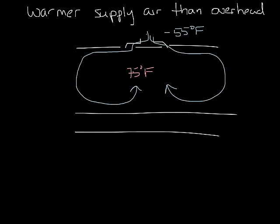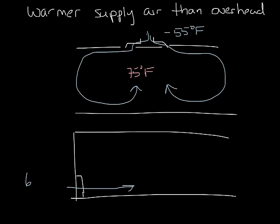In underfloor systems and displacement ventilation systems, the supply air goes right into the occupied zone, so you don't need to start as cold. Displacement ventilation systems use 63 to 68 degree supply air to get that same 75 degree space. If you don't have to cool the supply air down to 55 degrees to dehumidify, this can result in energy savings.